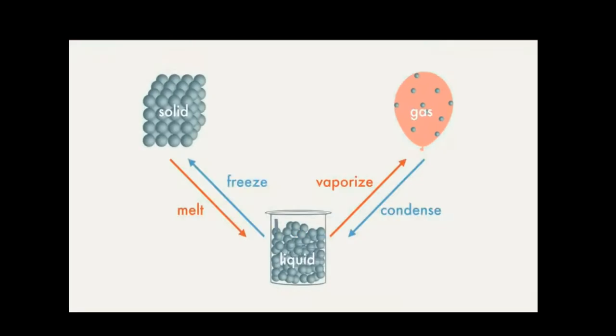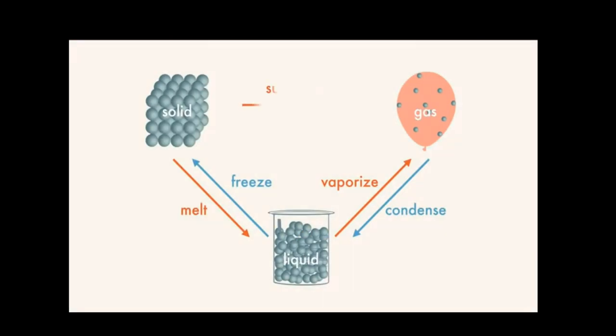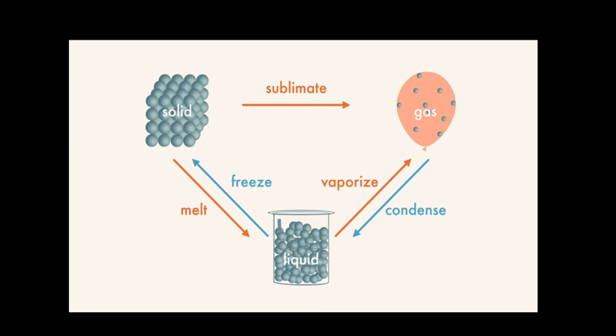Now back to the phase changes. Now solids can also skip the liquid phase and go directly to gas under the right conditions, usually low pressure or temperature. It's called sublimation. This is how we freeze dry food and why dry ice, which is solid carbon dioxide, makes great spooky fog at Halloween. Gas can also go directly to solid in a process called deposition, which is also sometimes called desublimation.